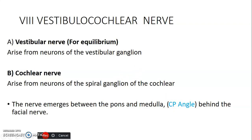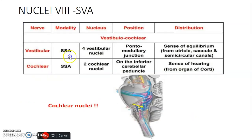Moving to the eighth cranial nerve — the vestibulocochlear nerve — it has a vestibular portion for equilibrium and a cochlear portion for hearing. The vestibular component arises from the vestibular ganglion and the cochlear nerve from the spiral ganglion. The nerve emerges between the pons and medulla at the cerebellopontine angle, behind the facial nerve. Both are special somatic afferents, with four vestibular nuclei and two cochlear nuclei at the pontomedullary junction.